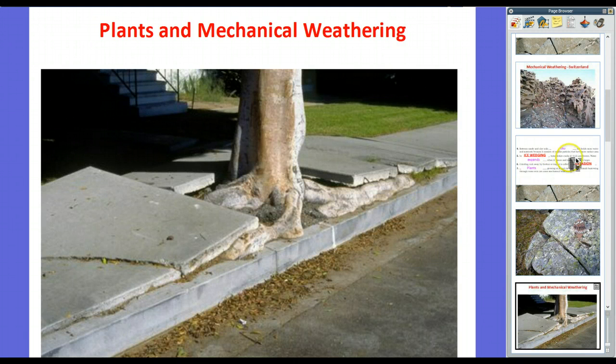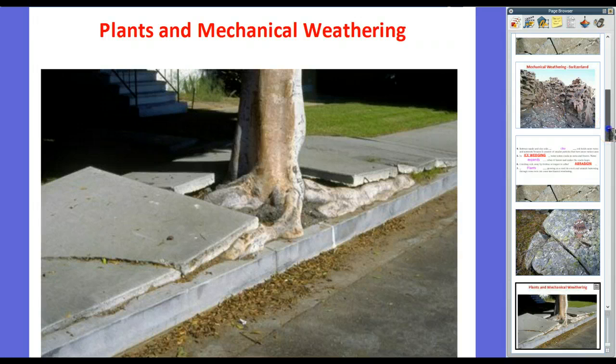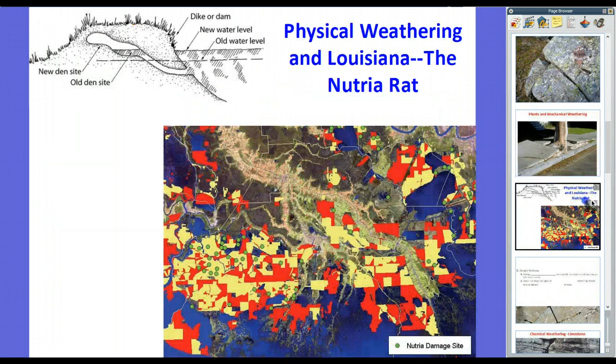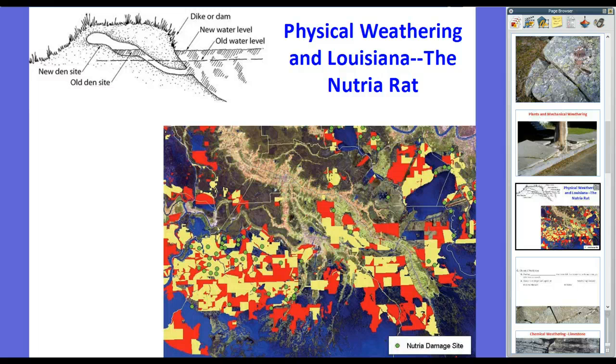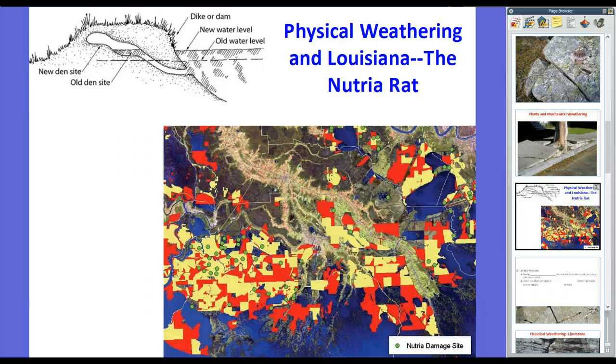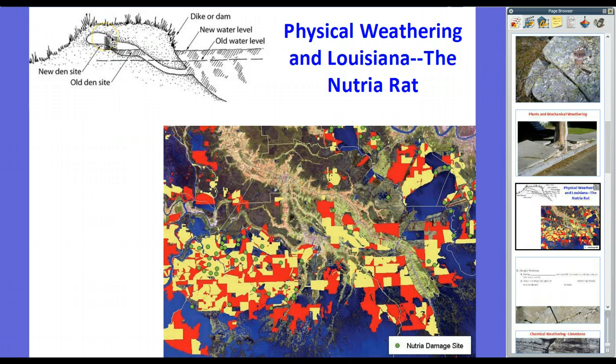Now, in Louisiana, we have to deal with animals doing some mechanical weathering itself through the form of Nutria Rats. And Nutria Rats pose a threat to natural and man-made levees preventing coastal erosion, which we'll get to later. So what happens, essentially, is Nutria Rats will dig into the ground. And they like swimming around. So they dig into the ground, into the levee. They build a nest.